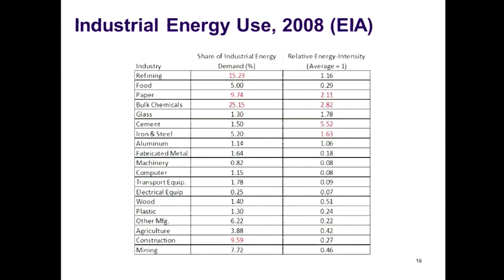Looking at the industrial energy use breakdown: a quarter of it goes to bulk chemicals — just heat to drive reactions. Paper gets 10%, oil refining gets 15%, and the rest is spread. Looking at energy BTUs per dollar of value added, cement is very energy intensive, and it's a major source of CO2 emissions, both from the energy and from the chemical reaction that the energy produces.